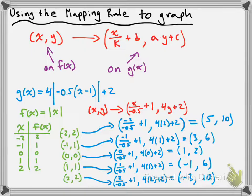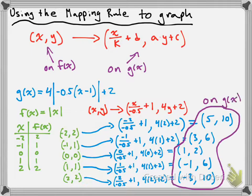Using 5 points from my parent function, I now have 5 points on my transformed function. These are my points on g(x). If I wanted to sketch a graph of g(x), all I need to do is plot these 5 points and draw in a curve — or in this case, since it's an absolute value function, it would be two straight lines forming a v-shape. This is how to use the mapping rule on a parent function to get points on your transformed function in order to graph it.